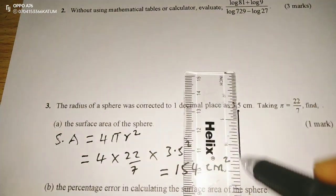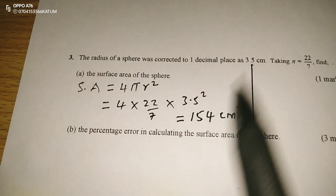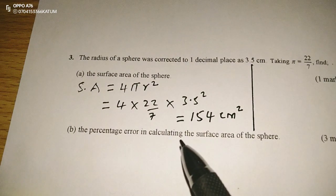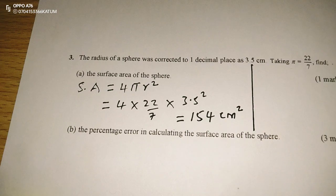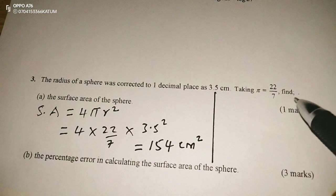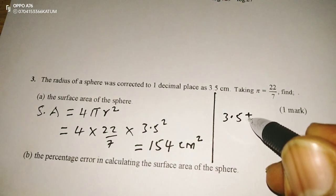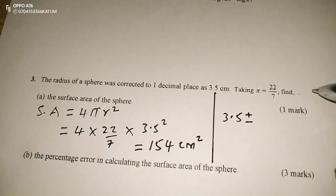Then to continue with the question now, we're being told in part B to also find the percentage error in calculating the surface area of the sphere. Therefore, we're supposed to know something. This radius has some limits into which it was recorded. So 3.5 has been recorded to an accuracy of 1 decimal place.